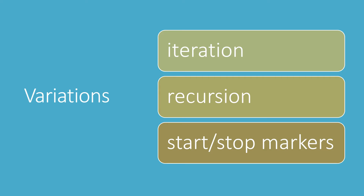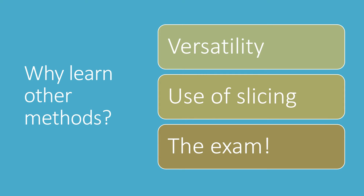Why bother to learn these other methods? Well, for one thing it makes you more versatile as a programmer if you know many ways of doing the same thing. Also, the method that uses slicing destroys the list — we got round that by passing the list as a parameter, which in Python means a copy of the list, but in some other languages you might not be able to do that. It's also important for A-level students, as any of these methods could come up in the exam.